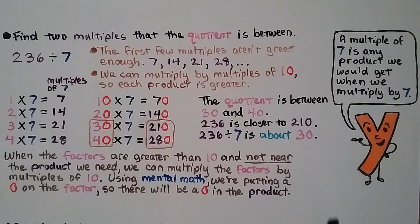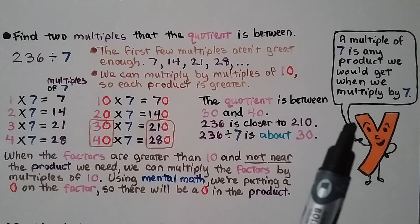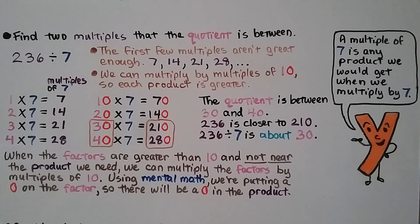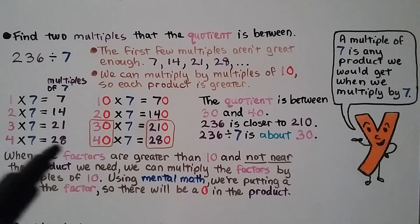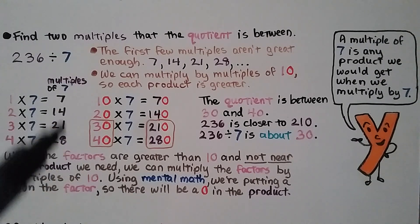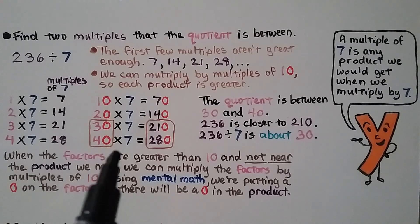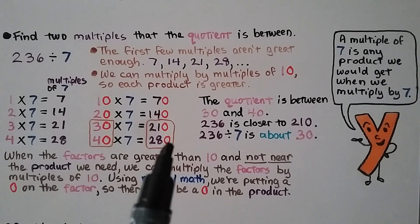A multiple of 7 is a product we get when we multiply by 7, and a multiple of 8 is a product we get when we multiply by 8. When the factors are too small and not near the product we need, we can multiply the factors by multiples of 10. Using mental math, we put a zero in the factor, so we put a zero in the product.